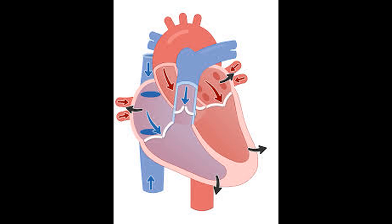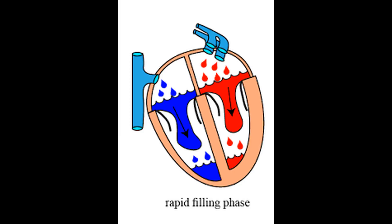When the ventricular pressure falls below the pulmonary artery and aortic pressure, the aortic and pulmonary valves close abruptly, making the second heart sound — heard at the beginning of isovolumic relaxation. So yet again all valves are closed, as was also the case during isovolumic contraction. The pressure is decreasing and the ventricles are relaxing, but the volume is not increasing in the ventricles because until the pressure in the ventricles falls below the pressure in the atria, the AV valves will not open. In isovolumic relaxation, the ventricles are like empty tanks. As soon as the pressure falls below atrial pressure, the AV valves open and blood abruptly comes into the ventricles.